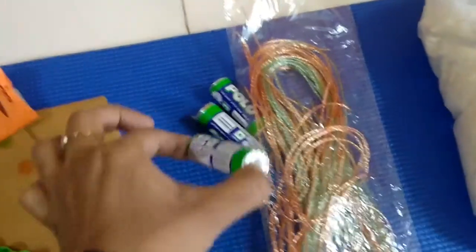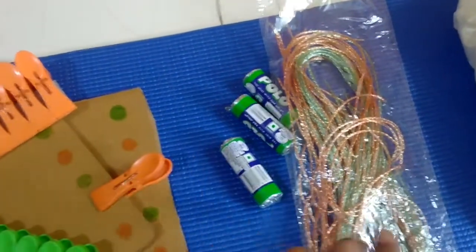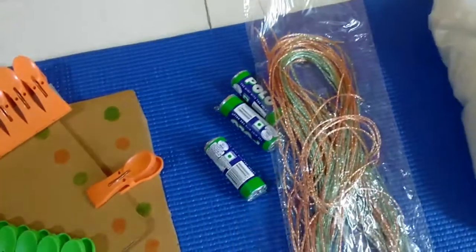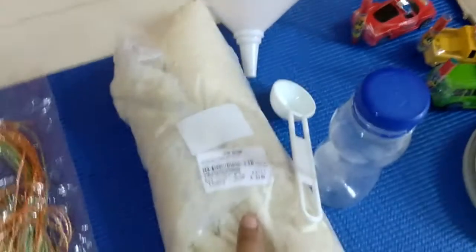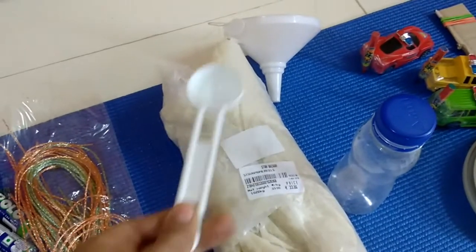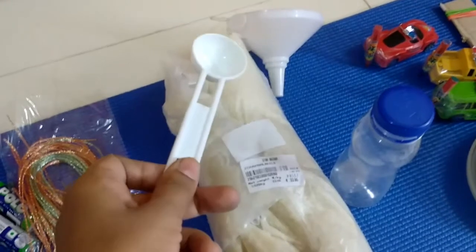These are strings and polos. The activity is to thread the string into the polos through their holes. Rice, bottle, funnel, and spoon—the activity is to use the spoon and pour the rice through the funnel into the bottle.